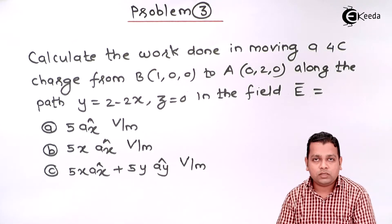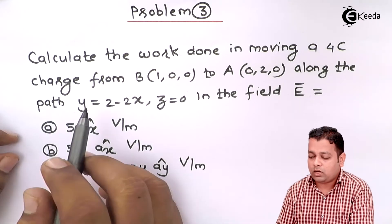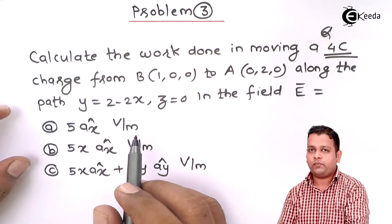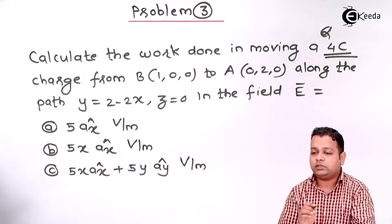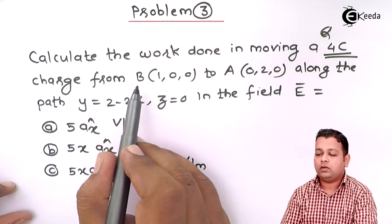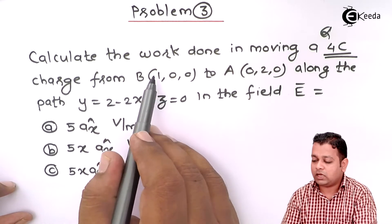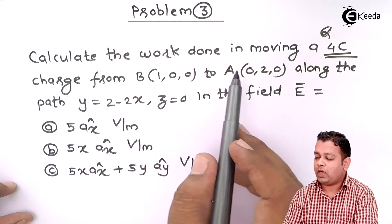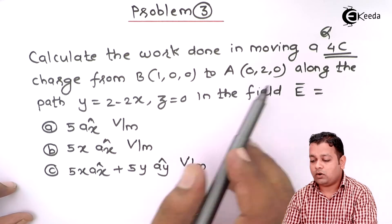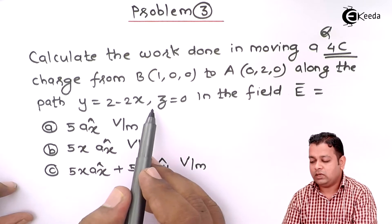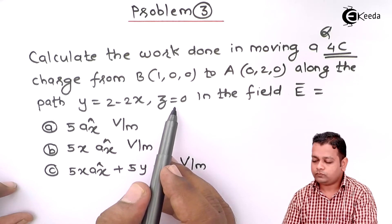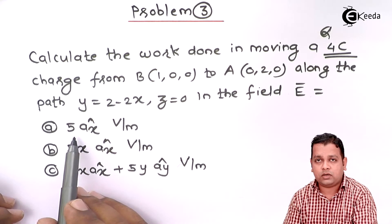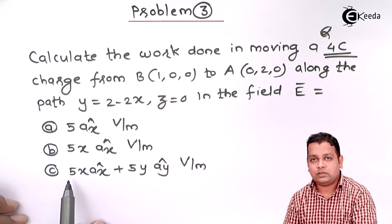After reading this problem statement, we come to know that the magnitude of charge Q = 4 coulombs. This charge moves from the initial point B at coordinates (1,0,0) to the final position point A at (0,2,0), along the path Y = 2 − 2X in the Z = 0 plane. Let us begin to calculate the amount of work done if this movement occurs in each of these three electric fields.